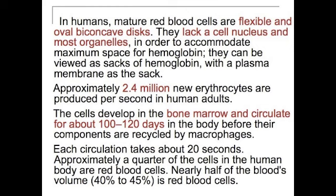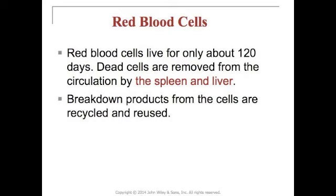Approximately 2.4 million new erythrocytes are produced per second in the human adult. The cells develop in the bone marrow and circulate for about 100 to 120 days in the body before their components are recycled by macrophages. Each circulation takes about 20 seconds. Red blood cells can only live for about 120 days; dead red blood cells are removed from the circulation by the spleen and the liver, and the breakdown products are recycled and reused.